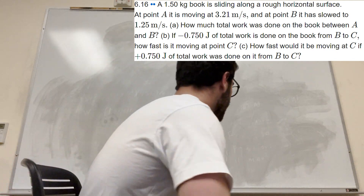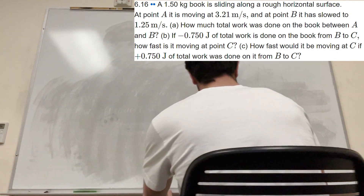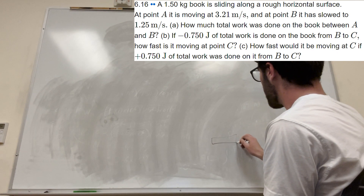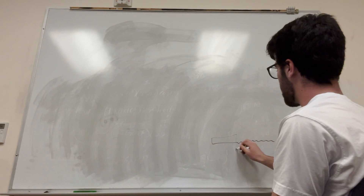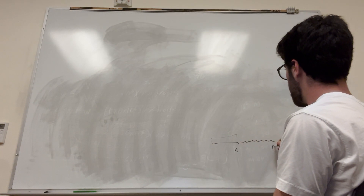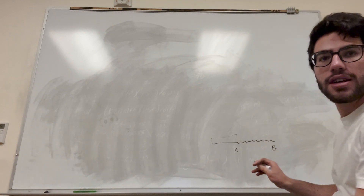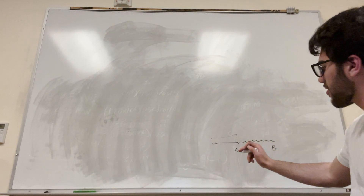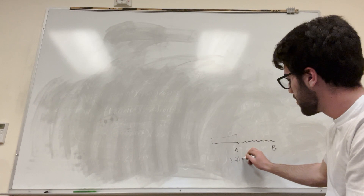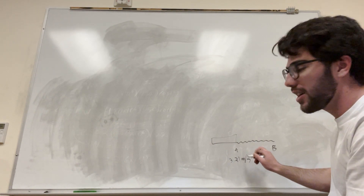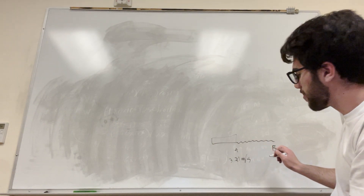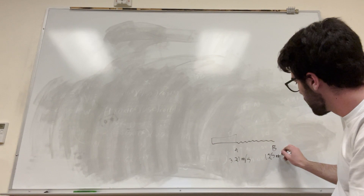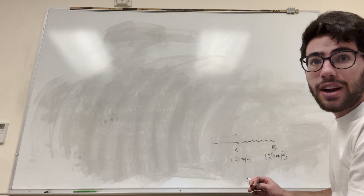Okay, let's draw this. So we have a book, and we have this rough surface here. This is A, and this is B. It's moving 3.21 meters per second here, and then it goes down to 1.25 meters per second.